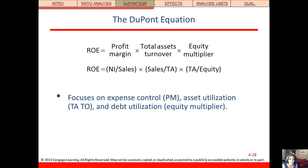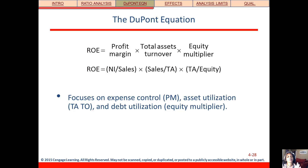Now that we've covered those five categories of ratios, let's take ROE — return on equity — and dig into it a little bit deeper. Remember we said that ROE is net income divided by total equity. If you break it into pieces, that's what the DuPont equation is doing for you.